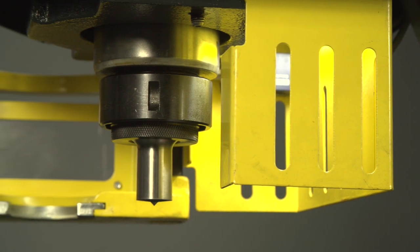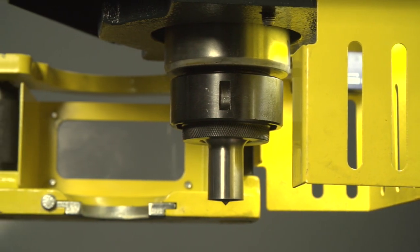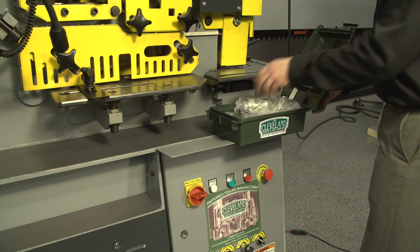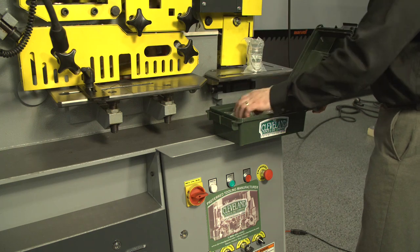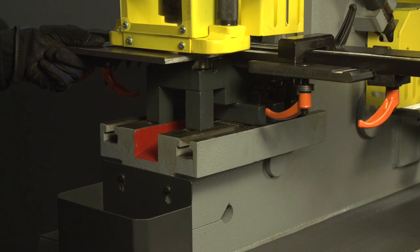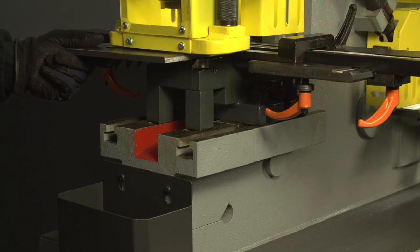Each iron worker includes a set of round punches and dies from 9 sixteenths to 1 and 1 sixteenth of an inch. Slug buckets are also included to catch debris through the chutes.